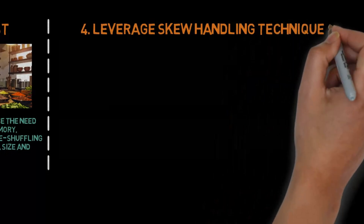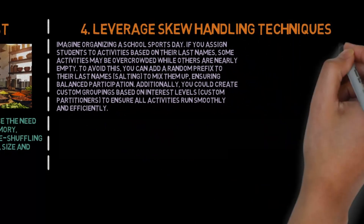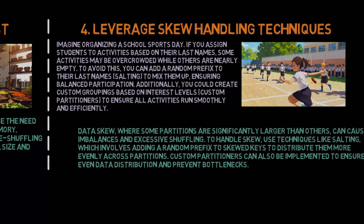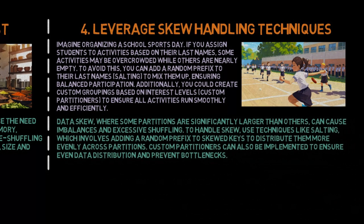Fourth, leverage skew handling techniques. Imagine organizing a school sports day — if you assign students to activities based on their last names, some activities may be overcrowded while others are nearly empty. To avoid this, you can add a random prefix to their last names (salting) to mix them up and ensure balanced participation. You could also create custom groupings based on interest levels using custom partitioners. Data skew, where some partitions are significantly larger than others, can cause imbalances and excessive shuffling. To handle skew, use salting — adding a random prefix to skewed keys to distribute them more evenly. Custom partitioners can also be implemented to ensure even data distribution and prevent bottlenecks.